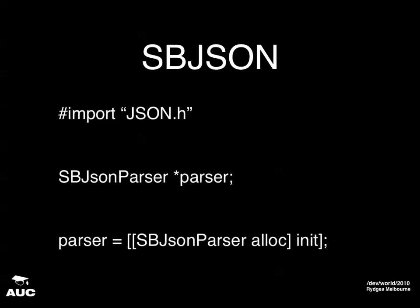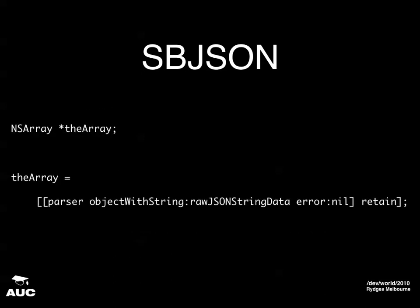To use SBJSON, we're going to have to import the files into the project. In the code, we're going to have to import that header as well. We basically declare a pointer to the parser — the parser's going to do all the hard work for us. Once we've got a parser set up, it's just a matter of creating some sort of container object for whatever comes out of the parser. In this case, I've made an array because I know the JSON string we're going to get back from Twitter is going to be an array-style object.